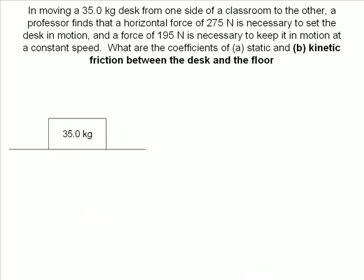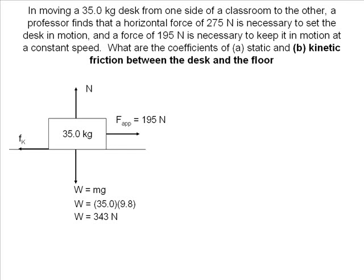In part B, we want to find the coefficient of kinetic friction while the desk is moving at a constant velocity. Our force applied is 195 newtons. Our weight hasn't changed, so we have the same value as in part A. This time we have the force of kinetic friction, so we draw it in our diagram. And our final force is the normal force. We will use the same three equations to solve our problem, although the friction equation has changed its subscripts to represent kinetic friction.